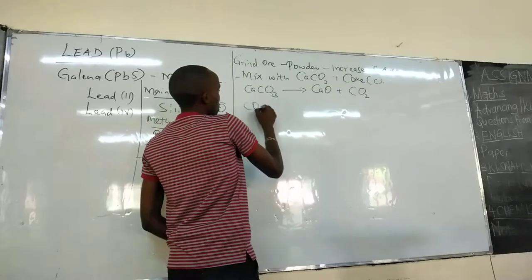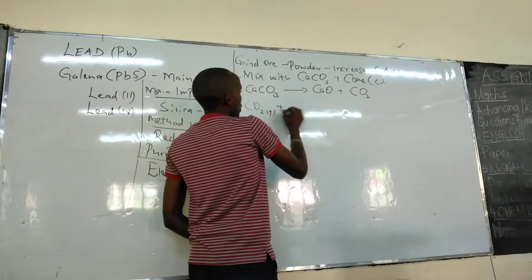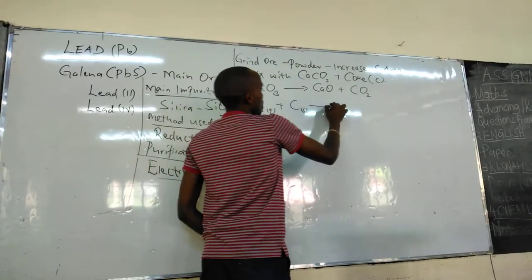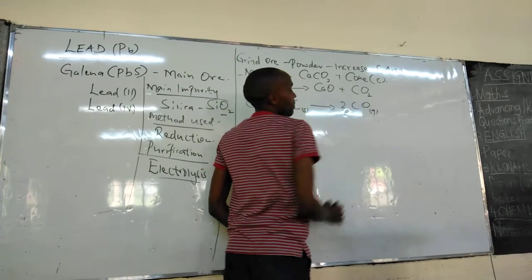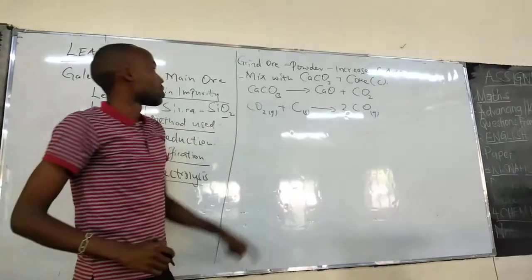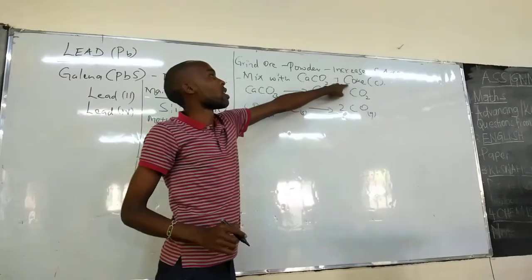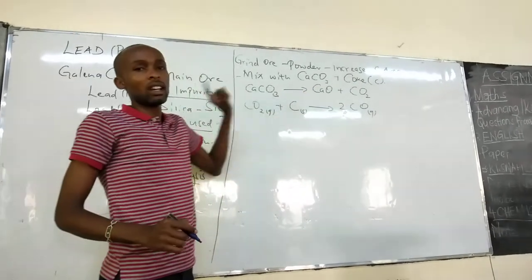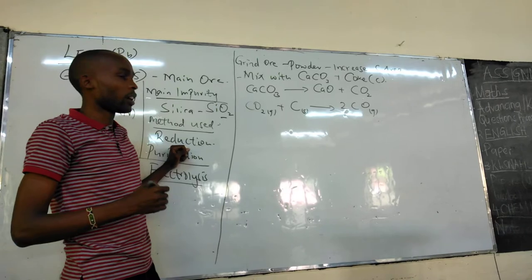Then, carbon dioxide undergoes reduction by coke, and we form carbon(II) oxide gas. So, carbon(II) oxide and the coke act as our main reducing agents.